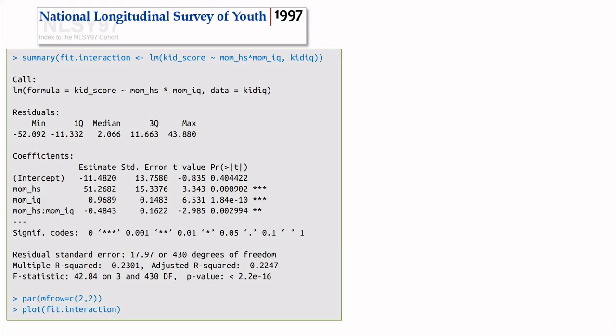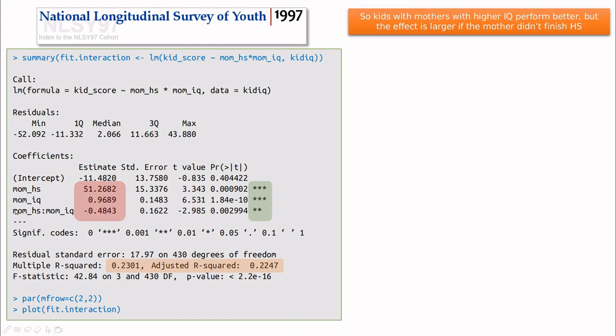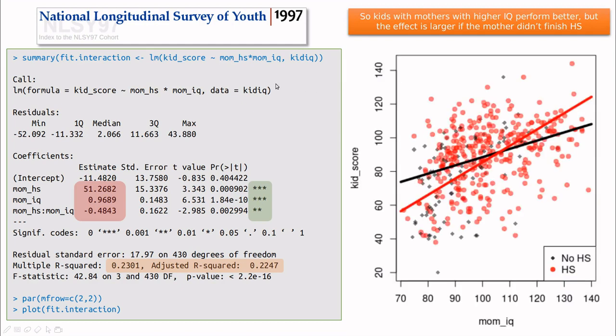Let's go back to the first example. What happens if we make an interaction between mom high school and mom IQ? You can see that we obtain these parameters - all of them are significant, regression is slightly better, but the interesting thing is this minus sign. This minus sign means that there is an effect in the mother having finished high school, but the highlight is that kids with mothers with higher IQ perform better, but the effect is larger if the mother didn't finish high school.